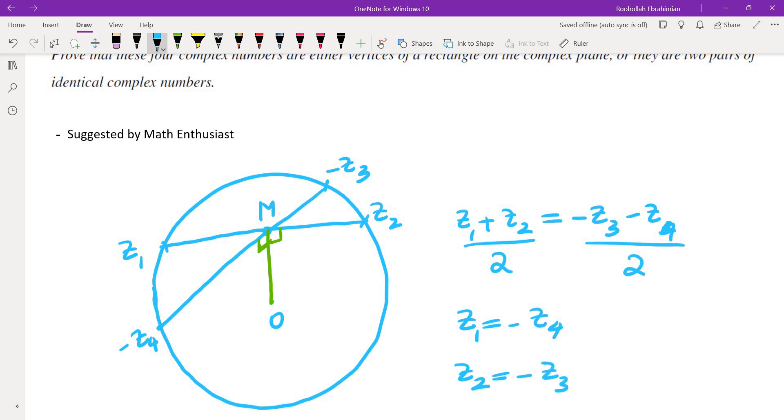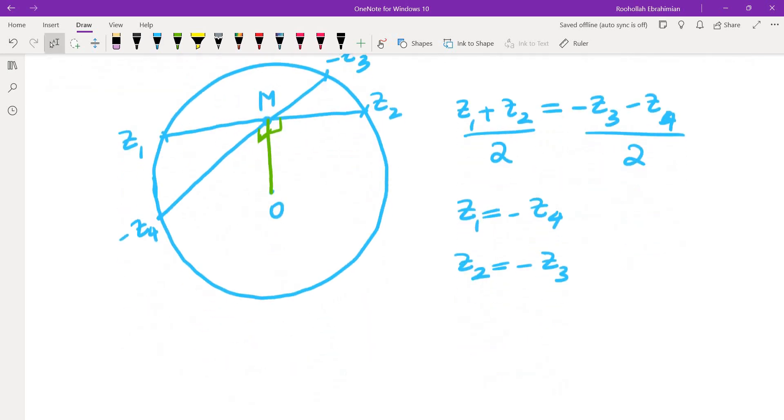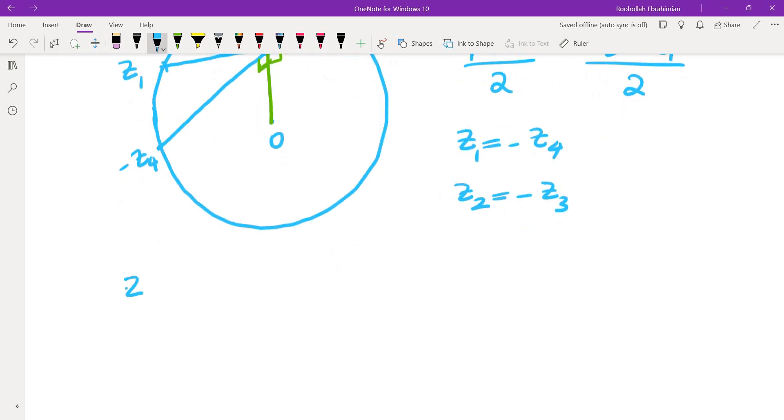And since that's the case, we can pretty much easily show that they are vertices of a rectangle. The reason is if you look at z1 plus z4, I would get zero, and z2 plus z3, that would also give me zero. If you look at that on the unit circle, you get z1 is here, z4 is the exact opposite, z2 is somewhere here, and z3 is the exact opposite.